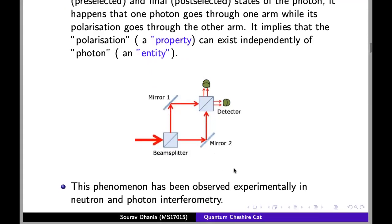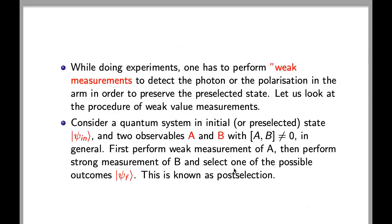This phenomena has been observed experimentally in neutron and photon interferometry. While doing experiments, one has to perform weak measurements to detect the photon or the polarization in the arm in order to preserve the pre-selected state.